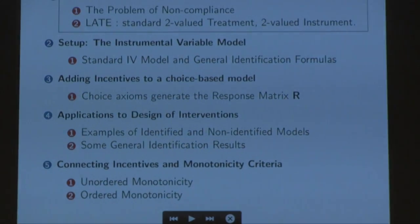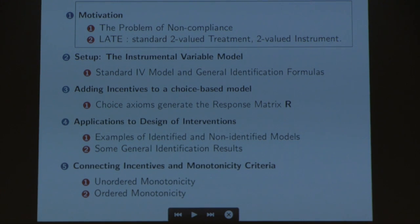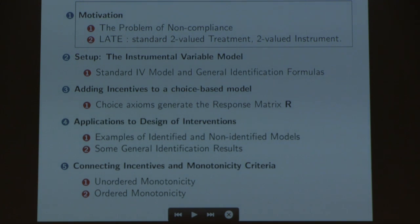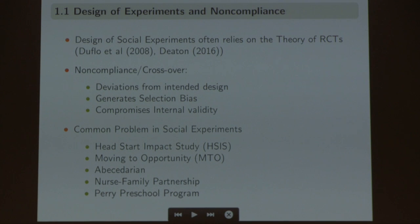The idea is to do designs that control and induce non-compliance in a way that gives you causality. I'm going to motivate the problem with data that I use. Then I'm going to go to a standard LATE — just to introduce some notation I'll use through the presentation. As Professor Ditton said, non-compliance is usually perceived as a deviation of the design, creates selection bias, and compromises the internal validity of the randomized control trial. And all the experiments I examined have one way or another a problem of non-compliance.